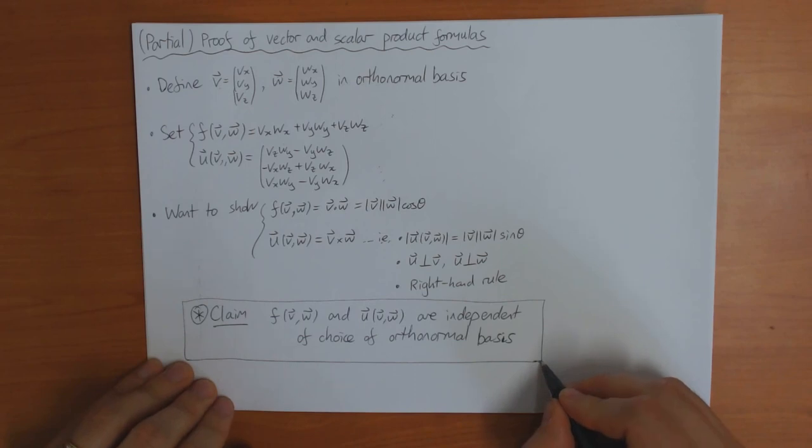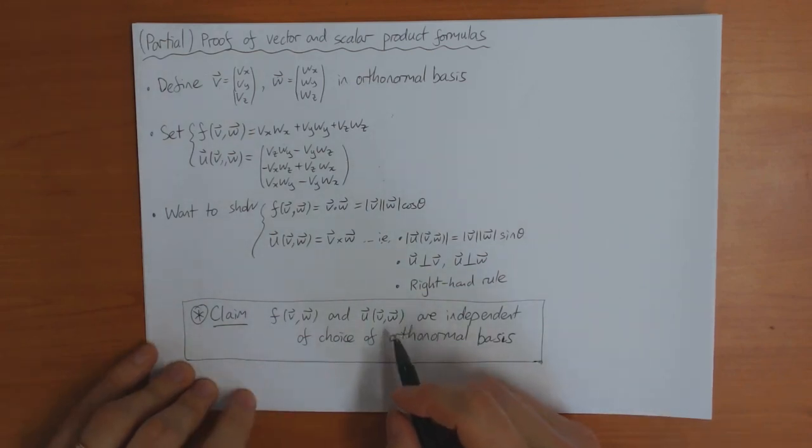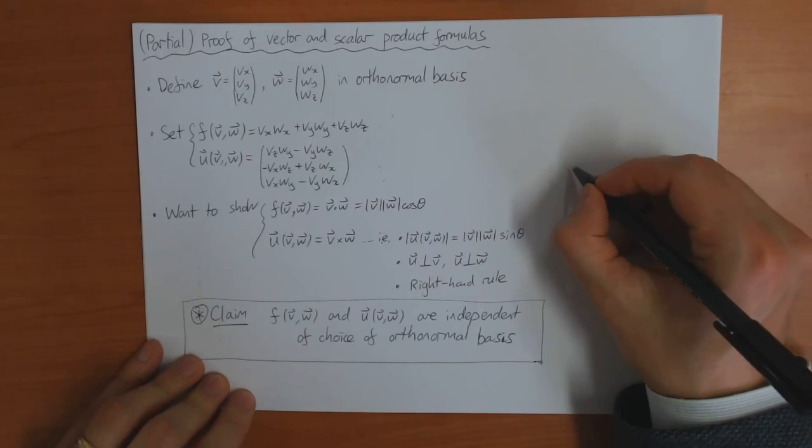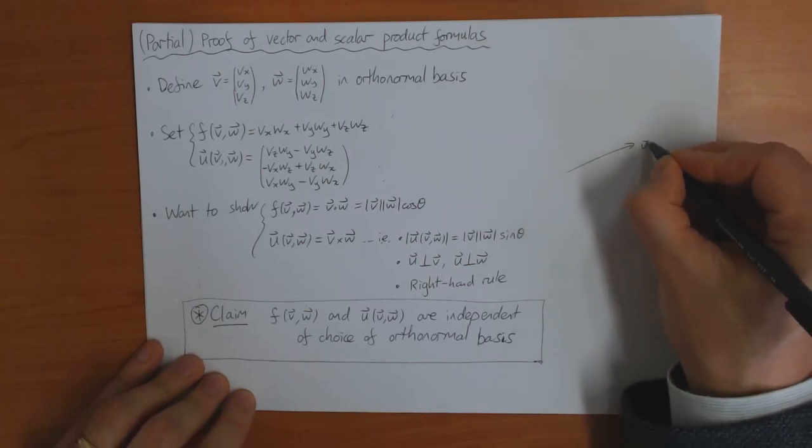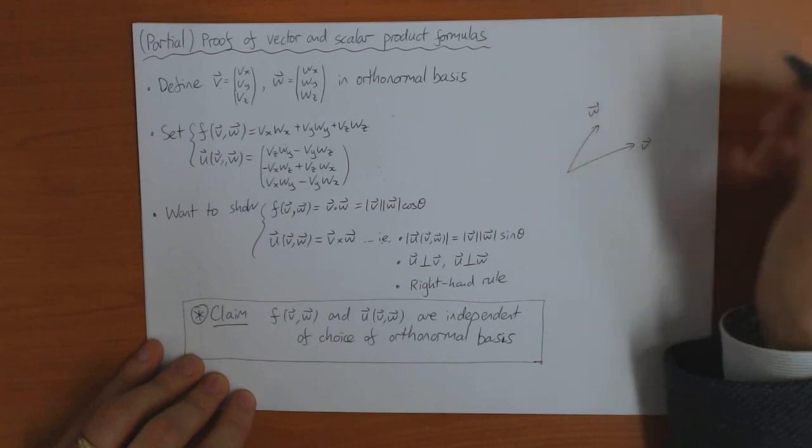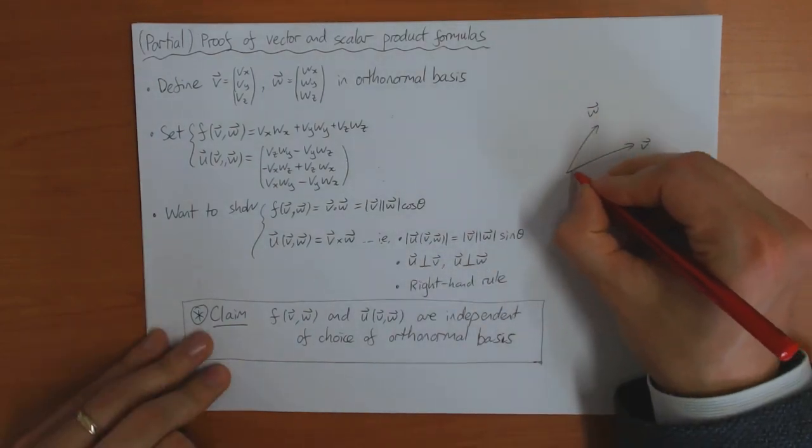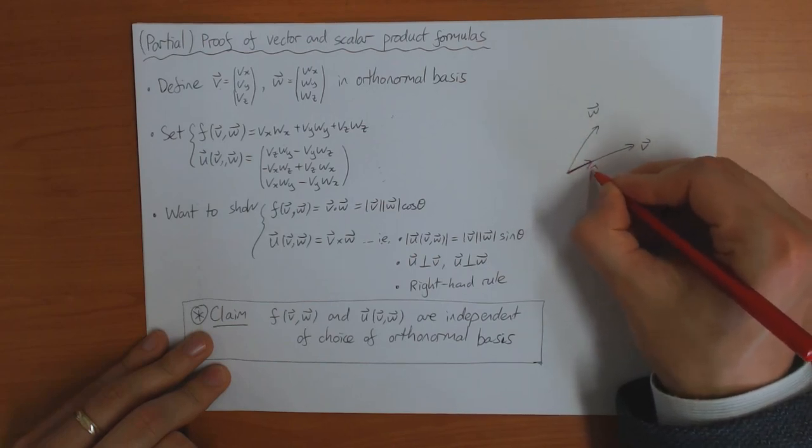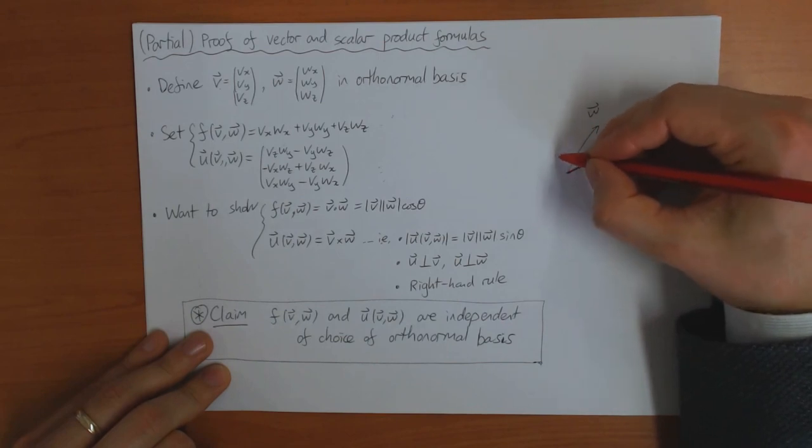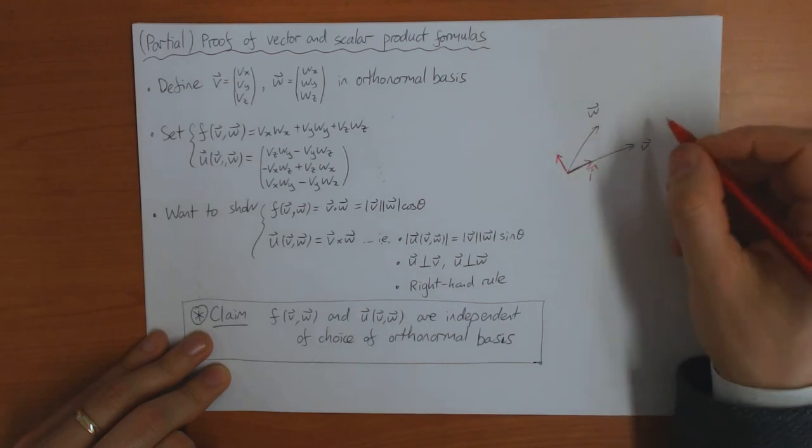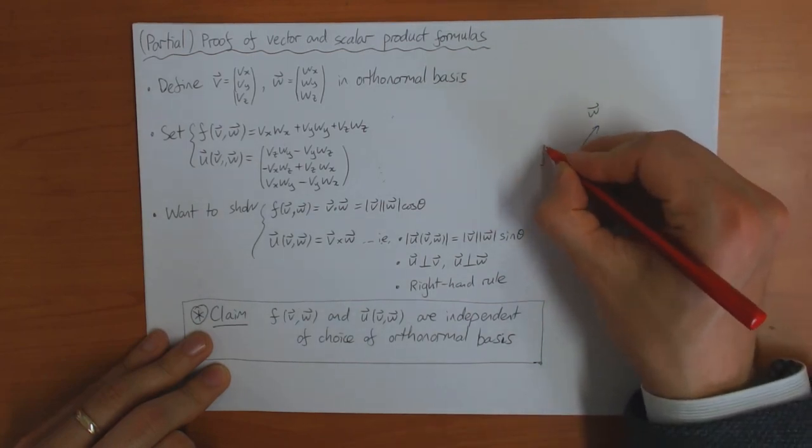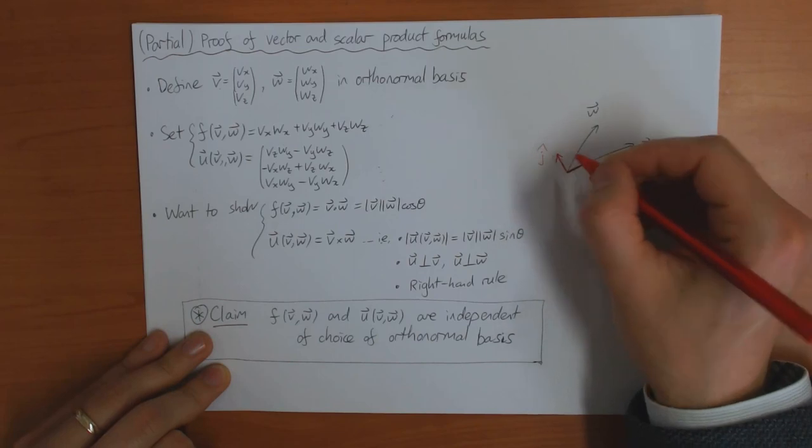So this claim is quite useful because it allows us to choose the basis to make the problem easy. And in particular, if you suppose that you've got the vectors v and w or something like this, I can always choose my basis such that the first basis vector i is parallel to v. And then I can choose the second basis vector j to be in the same plane as v and w, such that w has a positive j component.